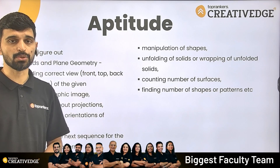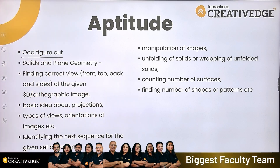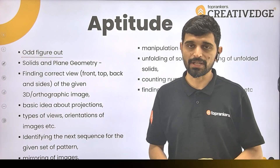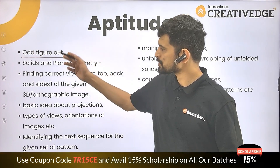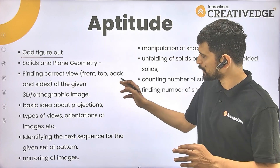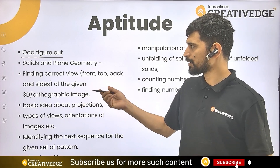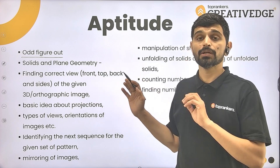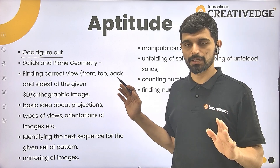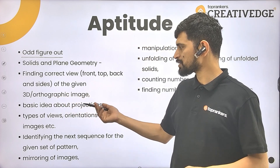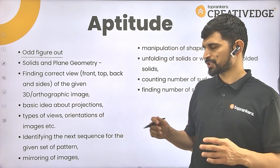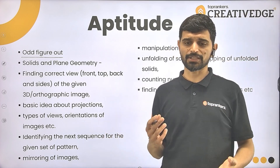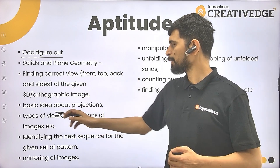The aptitude section carries the highest weightage. Topics to cover include odd-figure-out — a visual reasoning type of question — solid and plane geometry, and different views such as front, top, back, and side views of an image, where you have to identify the best possible answer. Also covered are 3D images, orthographic images, basic projections, front view, and top view.